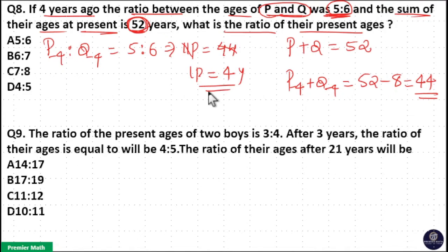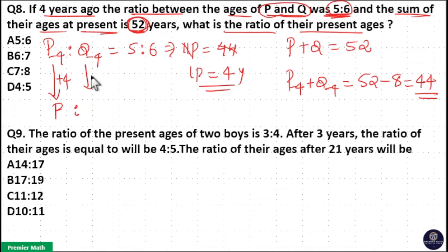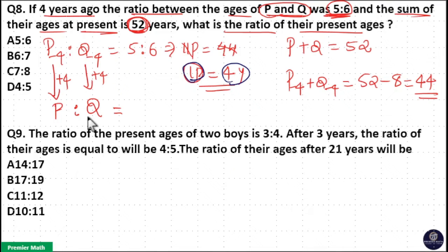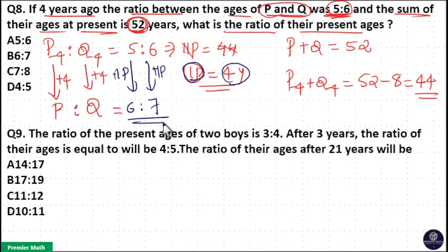Since 1 part is 4 years, just add 1 part to the 4-years-ago ratio to get the present age. So P's present age is P minus 4 plus 4 equals P. Adding 1 part to the ratio: 5 plus 1 is 6 parts, and 6 plus 1 is 7 parts. So the present ratio is 6 is to 7.